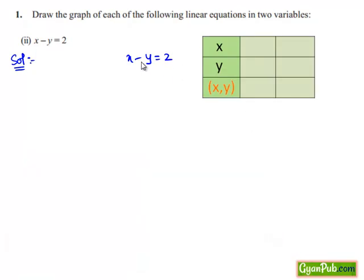Here, expressing y in terms of x, we get y equals x minus 2. Now let us put x equals 2 in the above equation. Then we get y equals 2 minus 2, which equals 0. So when x equals 2, y equals 0. Hence, the ordered pair (2, 0) is one solution of the given equation.